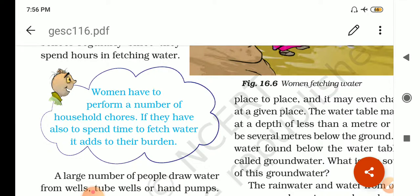Movements have to perform a number of household chores, and if they have also to spend time to fetch the water, it adds to their burden. Obviously it will be a burden. If there will be proper supply, water pipelines will be there, and the water is properly circulated to their homes or houses.